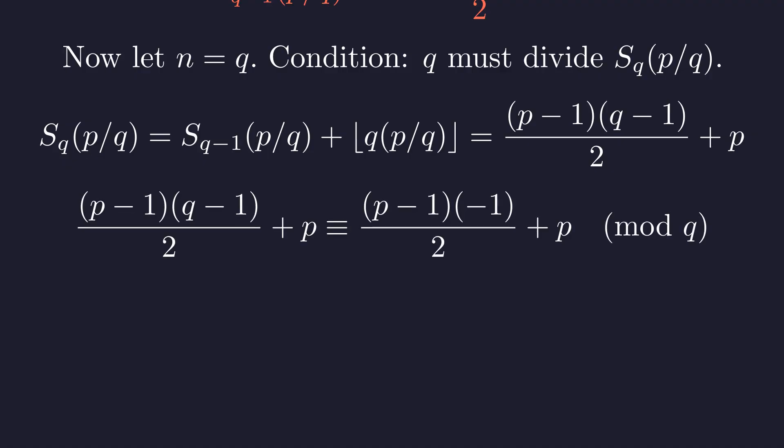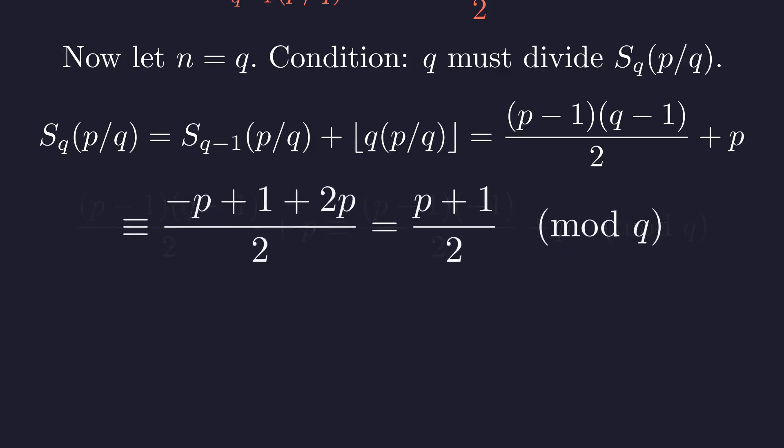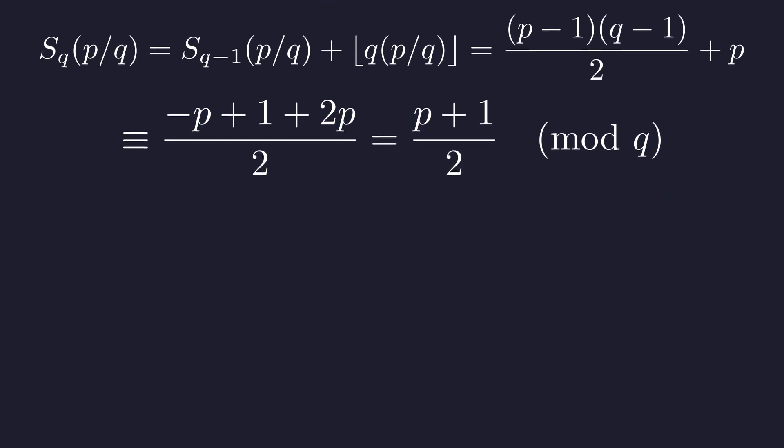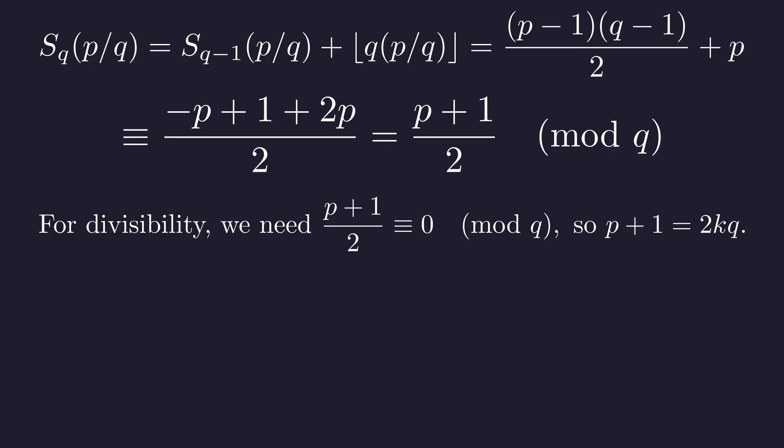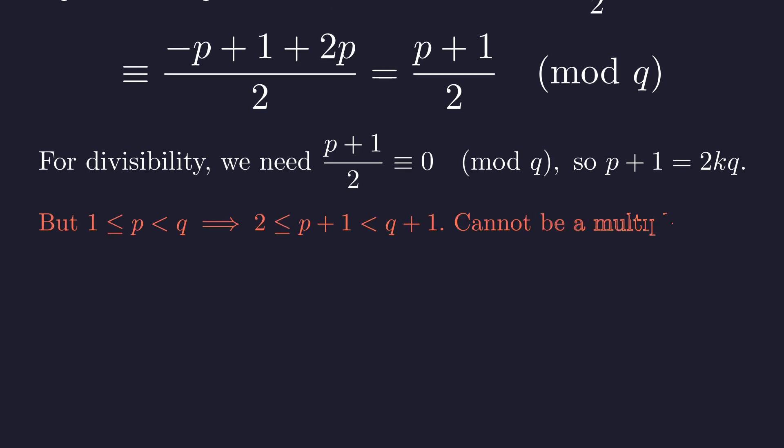Modulo q, the term q minus 1 is congruent to negative 1. Simplifying the expression, we find that the sum is congruent to p plus 1 all over 2. For the sum to be divisible by q, this congruence must be 0. This means p plus 1 must be a multiple of 2 times q. But we assumed p was strictly less than q. This means p plus 1 is less than q plus 1. Since q is greater than 1, it's impossible for p plus 1 to be a multiple of 2q.